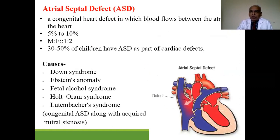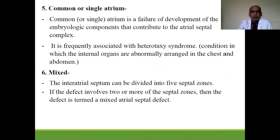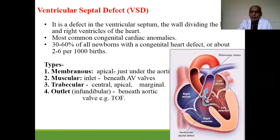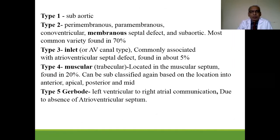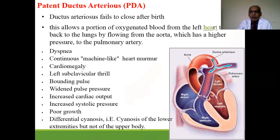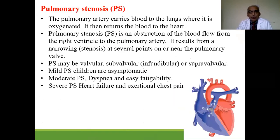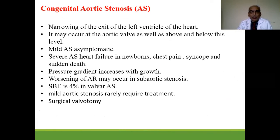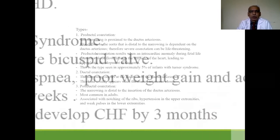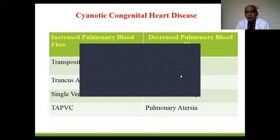In acyanotic congenital heart disease, we have seen ASD, ventricular septal defect (VSD), patent ductus arteriosus (PDA), and obstructive lesions like pulmonary stenosis, aortic stenosis, and very importantly, coarctation of the aorta.